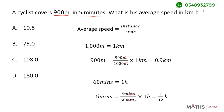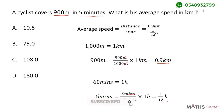We now have the distance in kilometers and the time in hours. The average speed equals 0.9 kilometers divided by 1/12 hours. 0.9 divided by 1/12 gives us 10.8 kilometers per hour. So the average speed of the cyclist is 10.8 kilometers per hour, and the correct option is A.